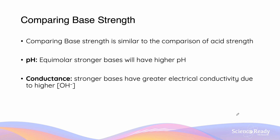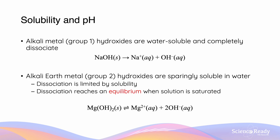Base strength has not been covered yet because the same principles apply: for pH, equimolar strong bases have a high pH; for conductance, strong bases have higher electrical conductivity because they have a higher OH⁻ ion concentration. Something different for hydroxides is that solubility must be taken into account. Group 1 and group 2 hydroxides are both strong bases that fully dissociate, but group 2 hydroxides are only sparingly soluble in water, which limits dissociation. The dissociation reaches equilibrium when the solution becomes saturated, so for an equivalent amount dissolved, group 1 hydroxide will have a higher pH than group 2 hydroxide.